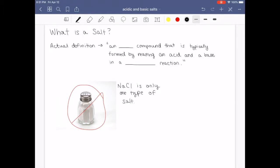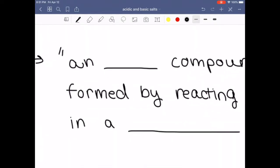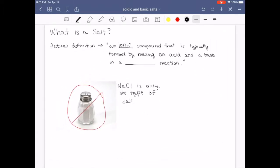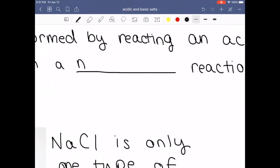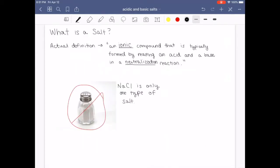So the actual definition of a salt is an ionic compound. Go back to Gen Chem 1 and think about what ionic versus covalent compounds are. So a salt is an ionic compound that is formed by reacting an acid and a base in a neutralization reaction. A neutralization reaction is simply a reaction where you react an acid and a base and produce a salt and water.